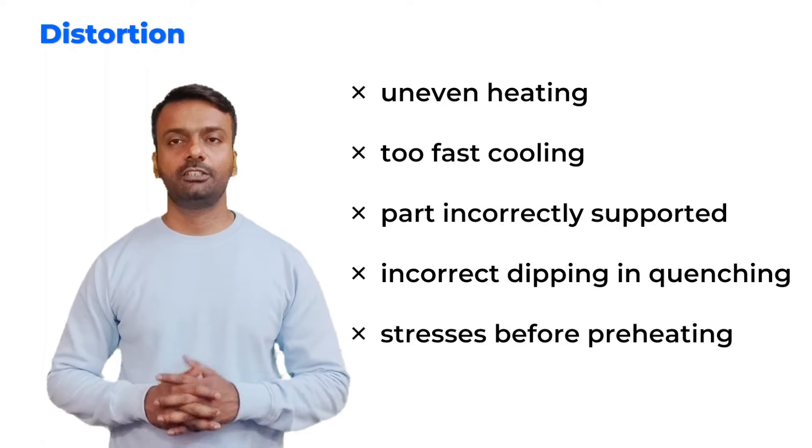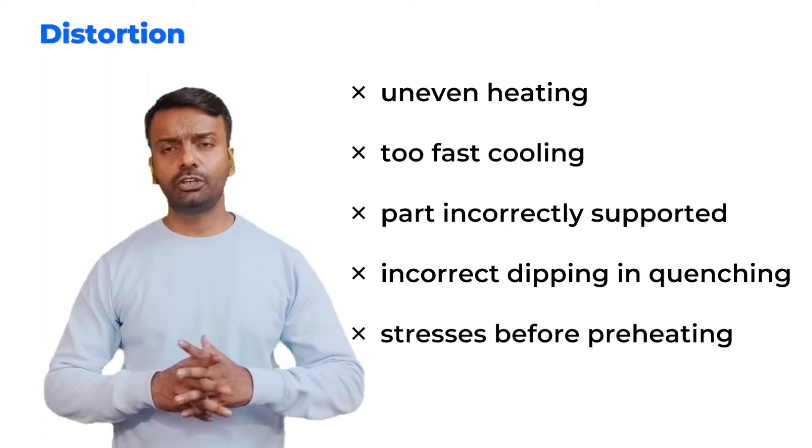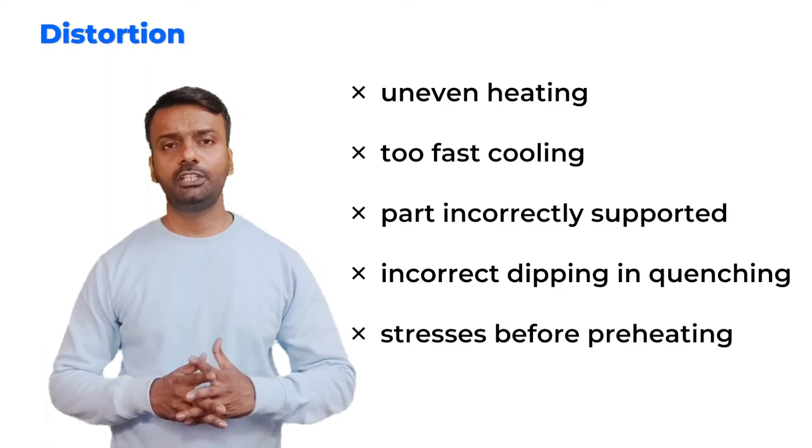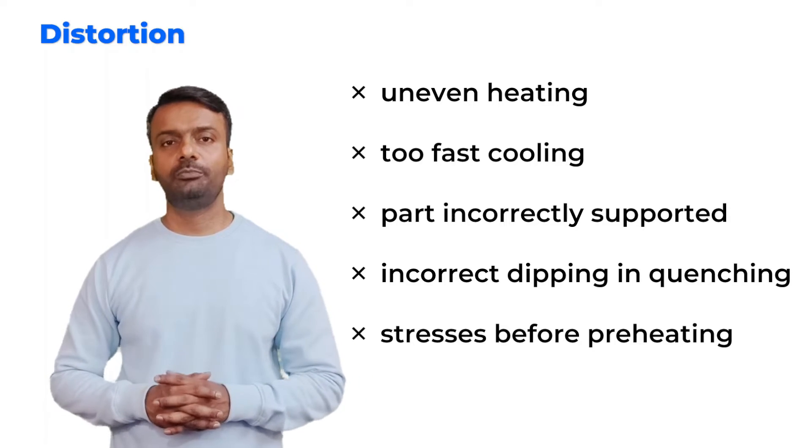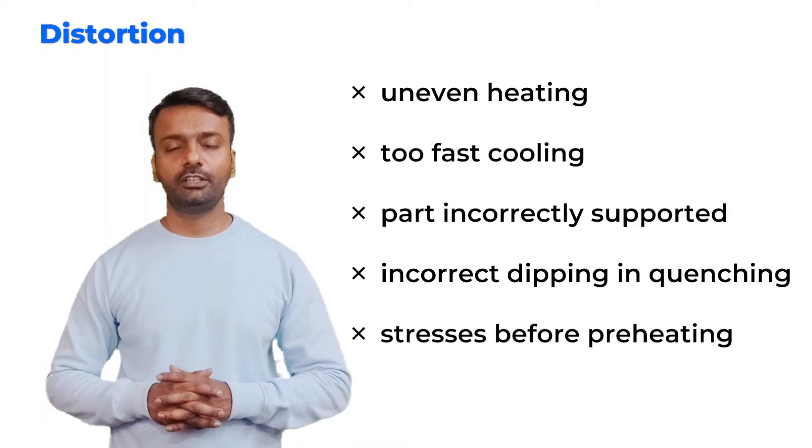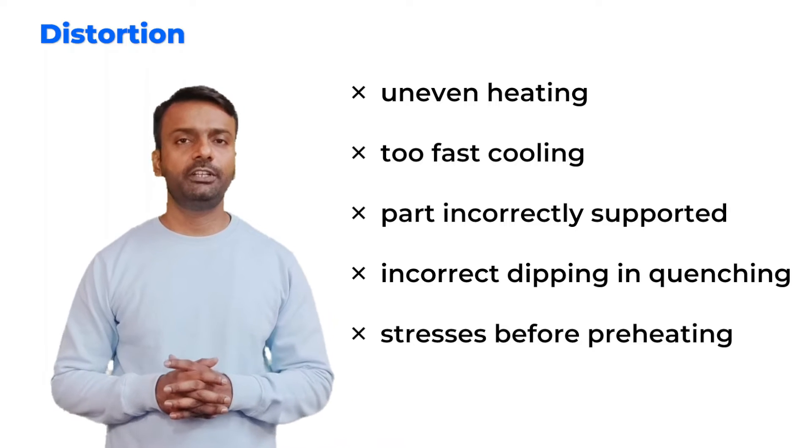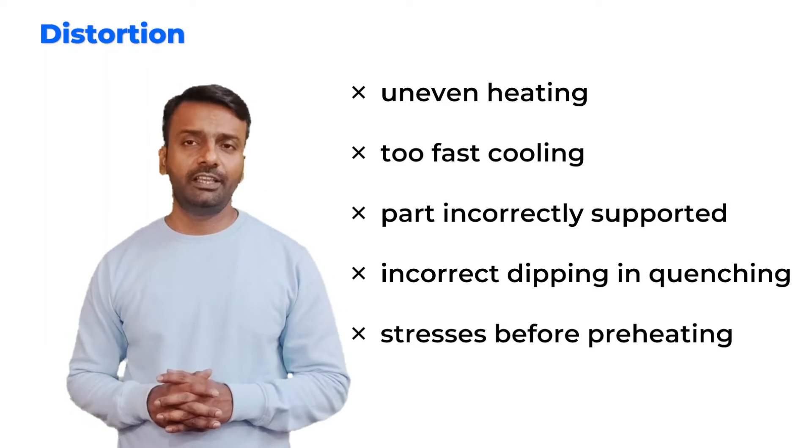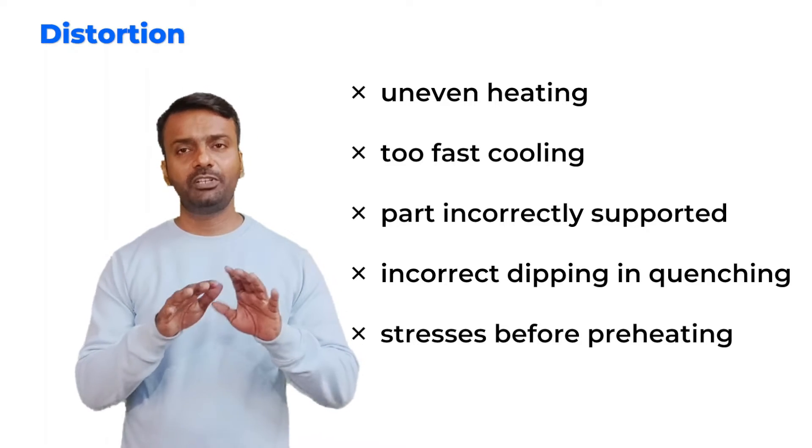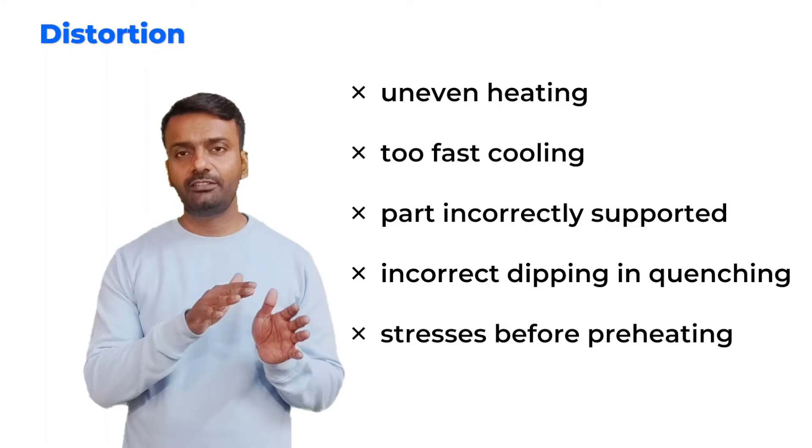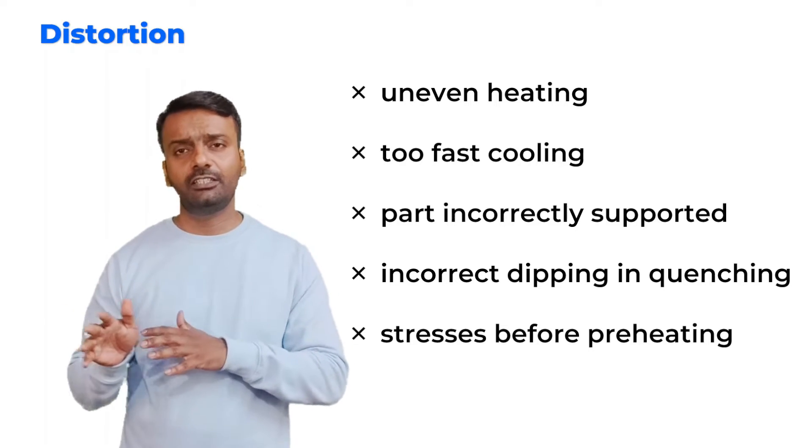The second defect is distortion. Distortion can be caused because of uneven heating, too fast cooling, parts incorrectly supported in the furnace, incorrect dipping in quenching, or stresses before preheating. Uneven heating can happen when the sample is not heated properly at one place and is heated in another place.